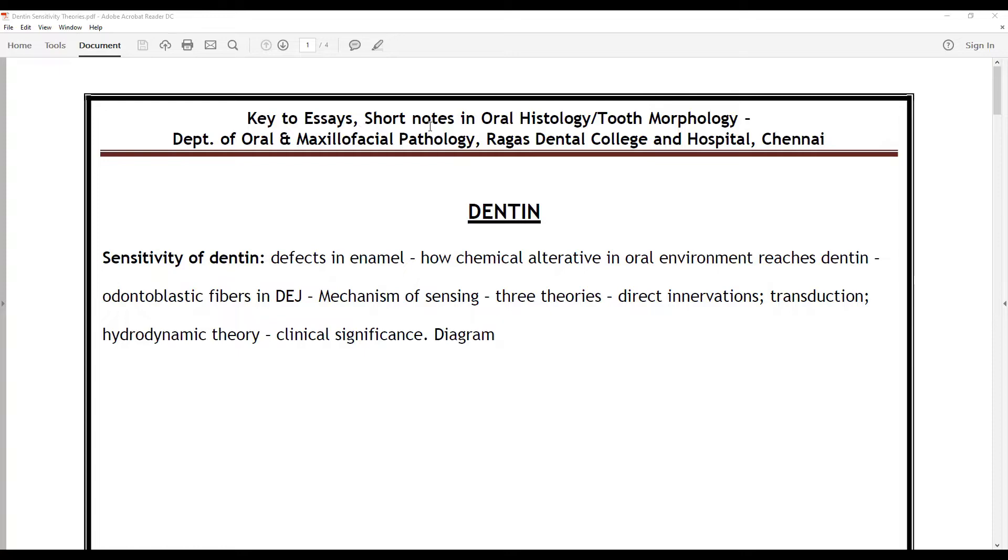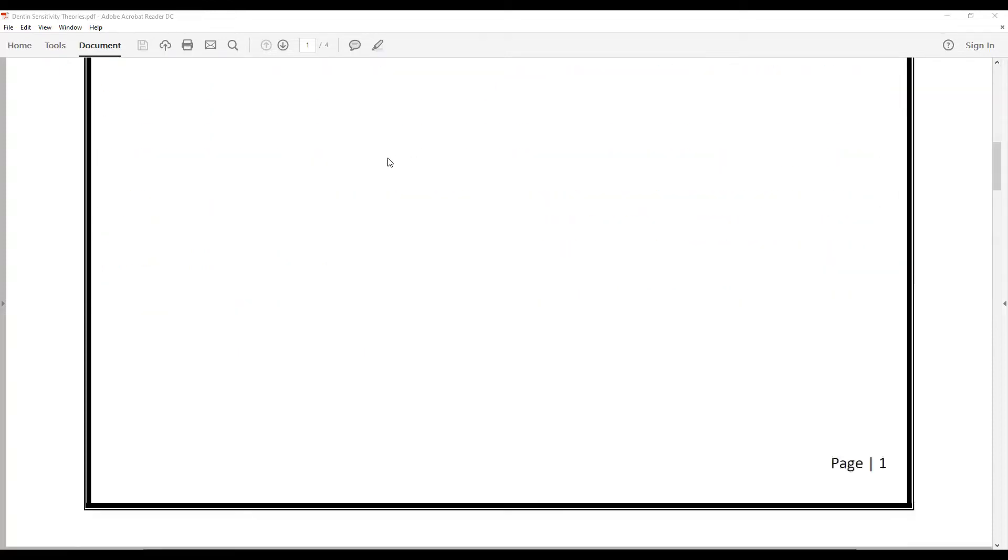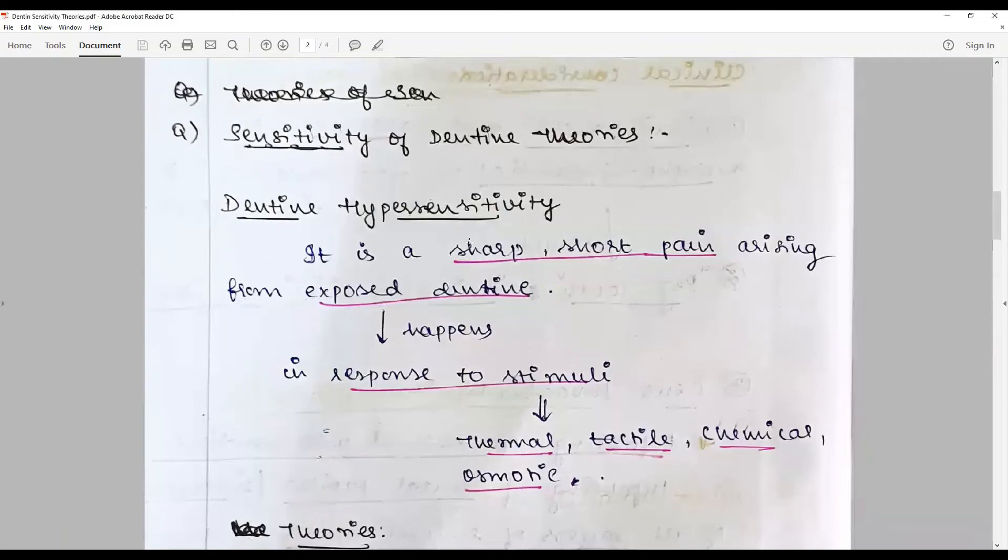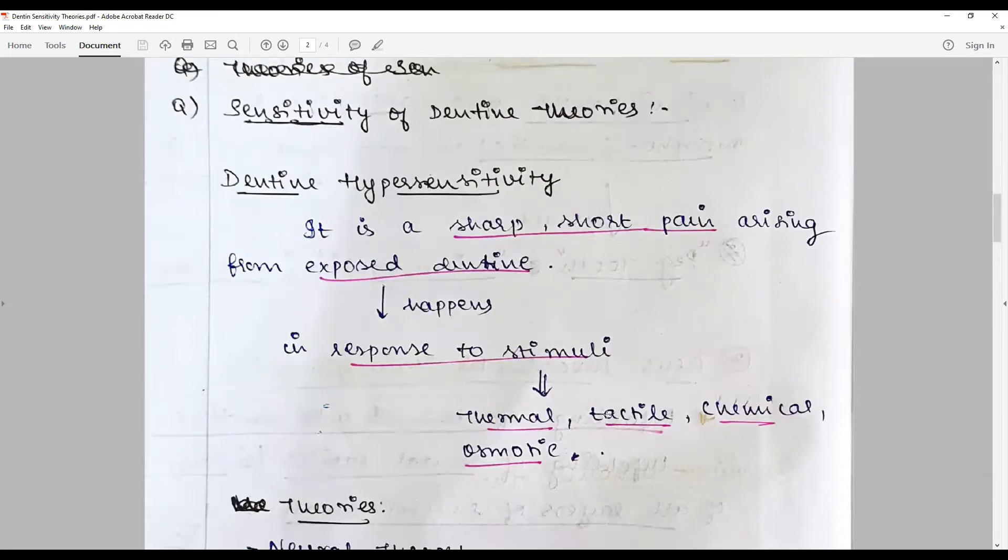So to jump into the answer, you need to discuss dentin sensitivity or hypersensitivity, which is a sharp pain arising from exposed dentin. It happens in response to stimuli. Stimuli can be thermal, tactile, chemical, or even osmotic, even barometric—that is, changing pressures as it happens when you go into higher altitudes in airplanes or spacecraft.